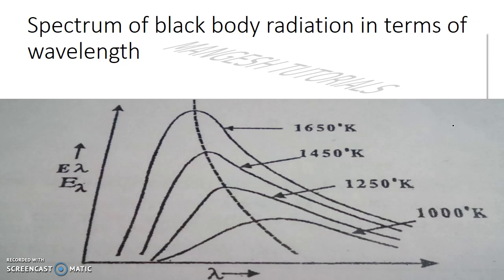This distribution of energy amongst various wavelengths was studied by scientists Lummer and Pringsheim. At different fixed temperatures, they measured the intensity of radiation corresponding to different wavelengths, and the measurements were represented graphically in the form of curves.